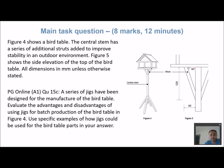In this video we're going to be talking about a question taken from a paper produced by PG Online. It's basically to do with jigs. A series of jigs have been designed for the manufacture of the bird table shown in figure four. Evaluate the advantages and disadvantages of using jigs for batch production of the bird table, using specific examples of how jigs could be used for the parts.